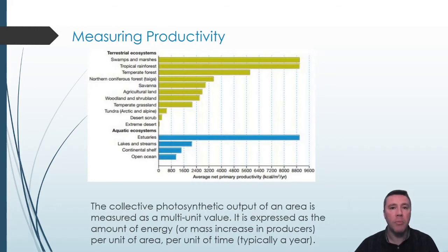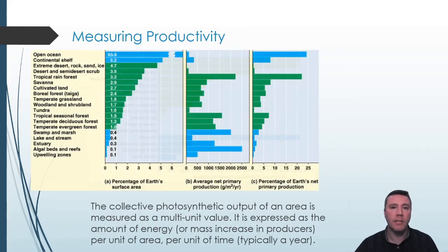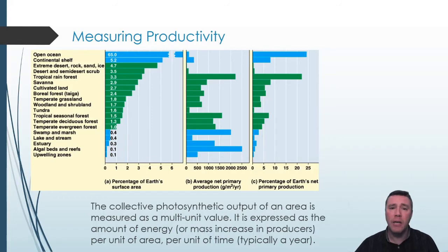That biome is far more productive than a tundra, which, on average, produces only around 500 kilocalories per meter per year. The second chart is useful in making the point that, per unit of area, a given ecosystem may not be very productive, but because of the size of the ecosystem, it can be collectively very productive.